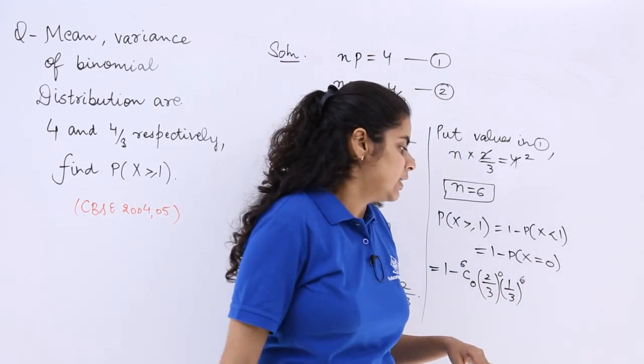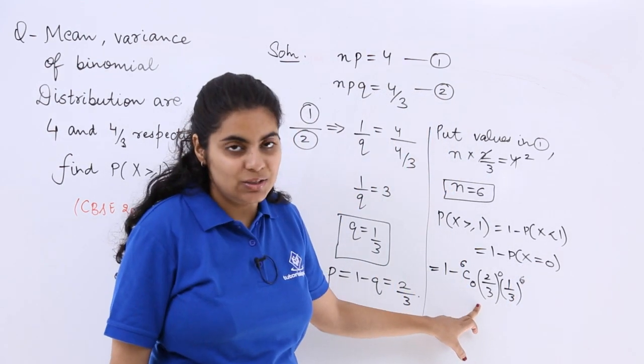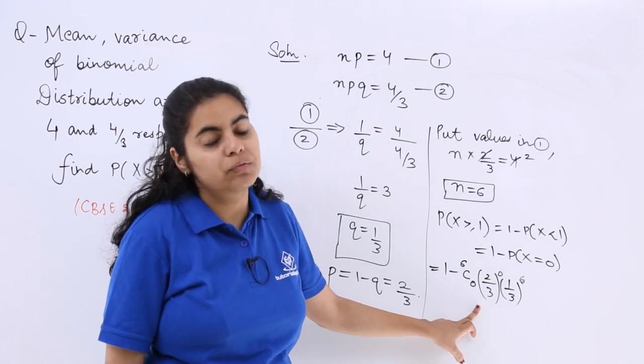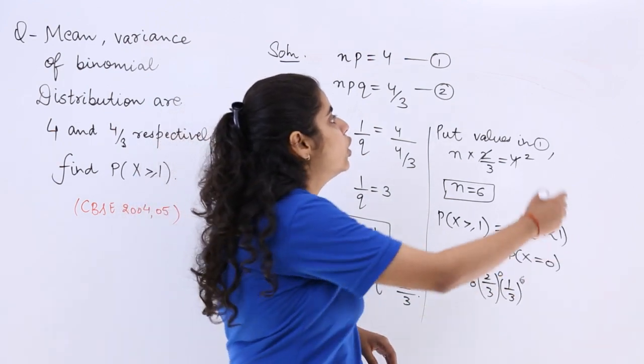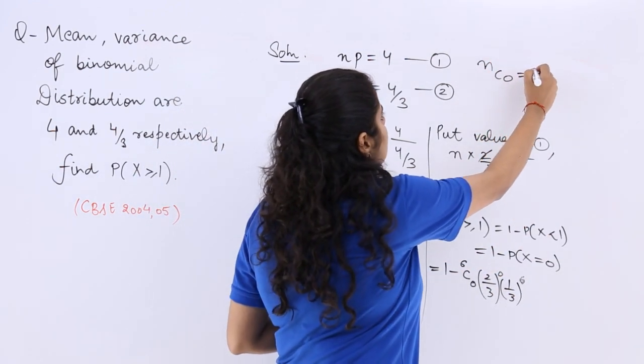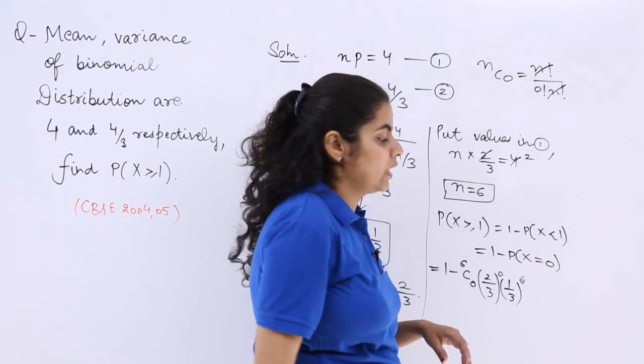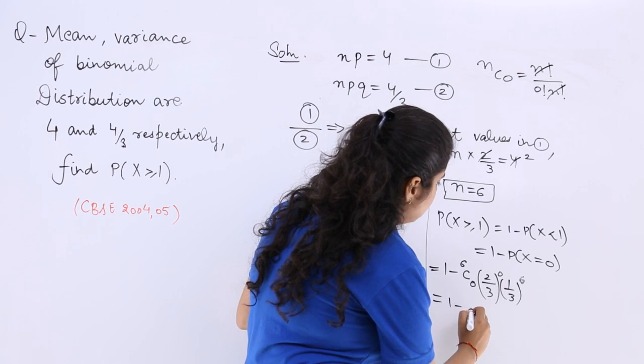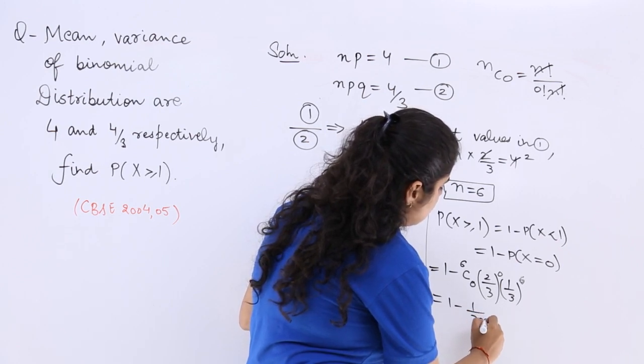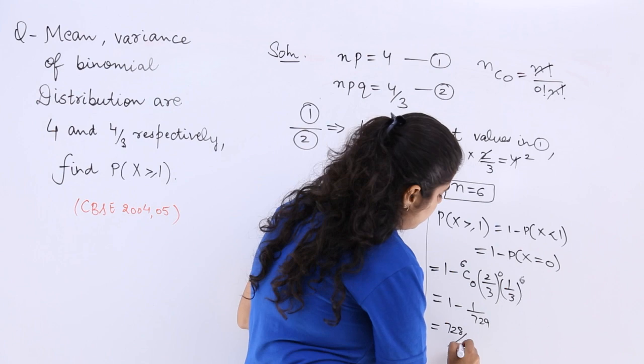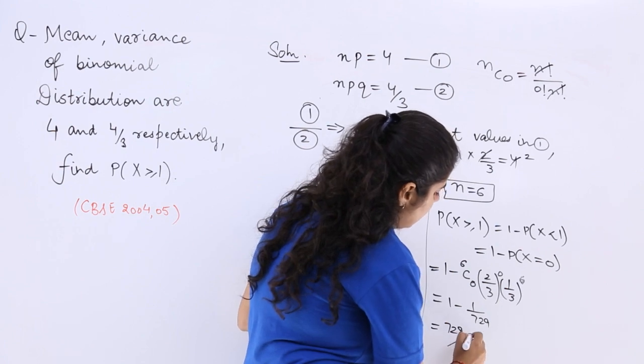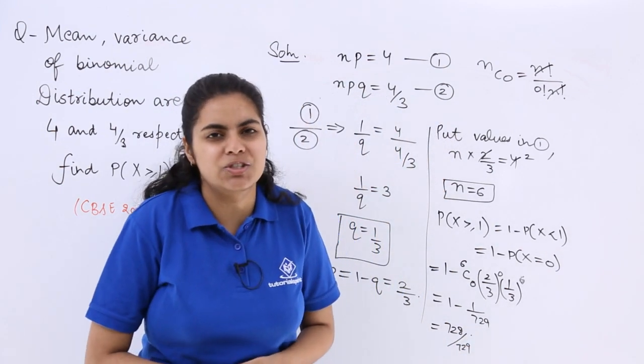Here I can write here 6. Now what to do? 6C0, nC0 is 1. Because you know nC0 is equal to n factorial upon 0 factorial multiply n factorial. Now this is 1 minus 1 by 729 which gives you 728 by 729 as the answer to this question.